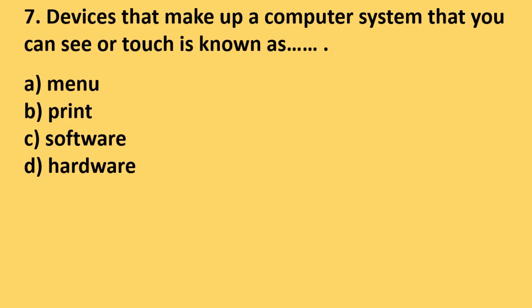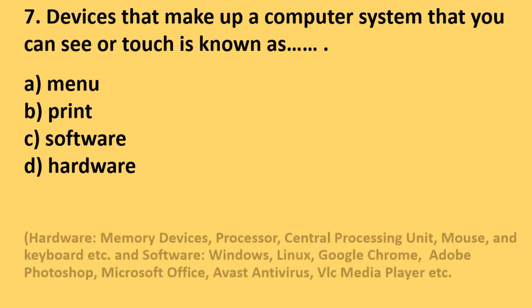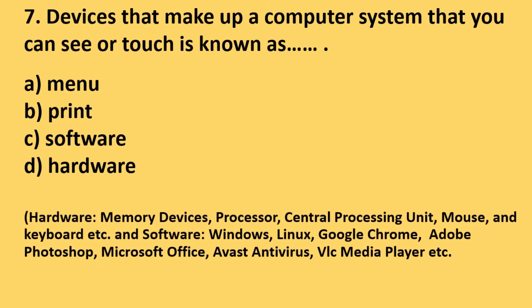Now let's see some examples of software and hardware. Hardware examples are memory devices, processor, central processing unit, mouse and keyboard, etc. Whereas software examples are Windows, Linux, Google Chrome, Adobe Photoshop, Microsoft Office, Avast Antivirus and VLC media player, etc.